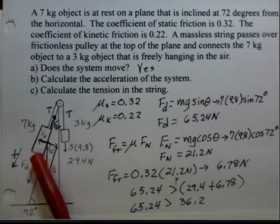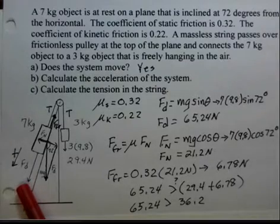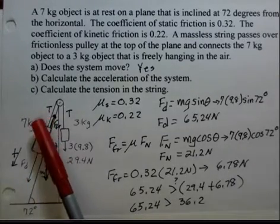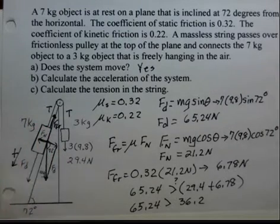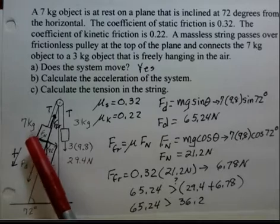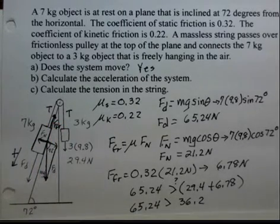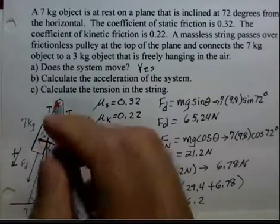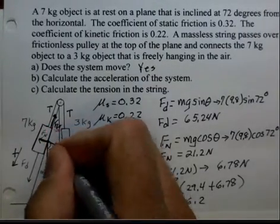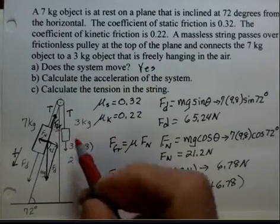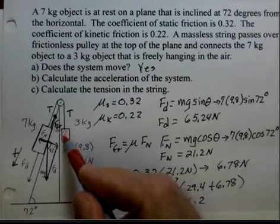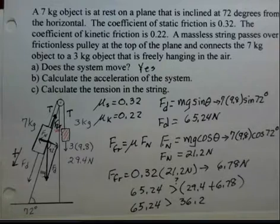There's a component of the weight directed down the plane, tension in the string upward, and if the object moves down the plane, the force of friction will oppose that up the plane. On the other side, there's a 3 kilogram object hanging freely with a weight of 29.4 newtons.